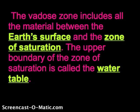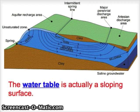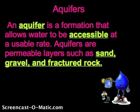The vadose zone includes all the materials between the earth's surface and the zone of saturation. The upper boundary of the zone of saturation is called the water table. The water table is not flat — it is a sloping surface that mimics the topography of the earth. If there's a big hill, the water table mimics that hill underground. An aquifer is a formation that allows water to be accessible at a usable rate; if you can't pull the water up, it really isn't an aquifer. Aquifers are permeable layers such as sand, gravel, and fractured rocks.